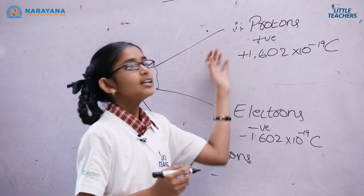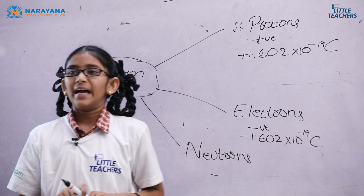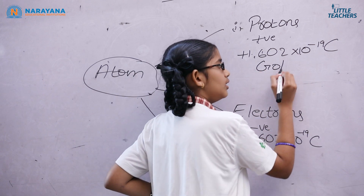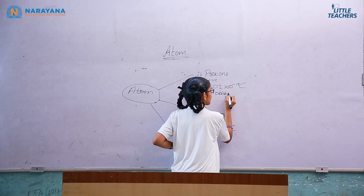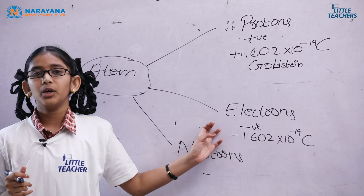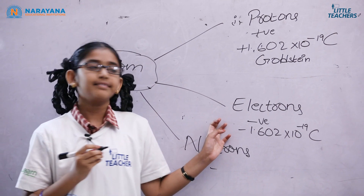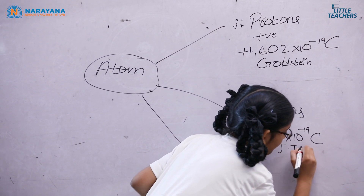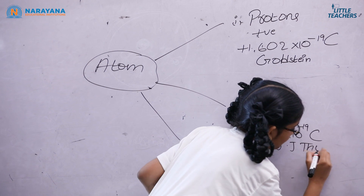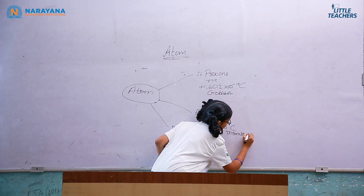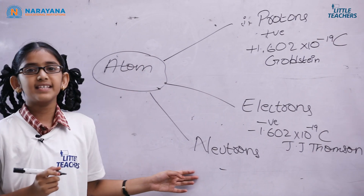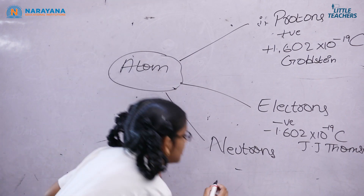Protons are discovered by Goldstein. Electrons are discovered by J.J. Thomson. Neutrons are discovered by James Chadwick.